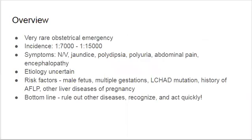Acute fatty liver of pregnancy is a rare but emergent obstetrical condition with an incidence of anywhere between 1 in 7,000 and 1 in 15,000. The symptoms of this condition are fairly vague and nonspecific, and can include vomiting, jaundice, polydipsia, polyuria, abdominal pain, and encephalopathy.